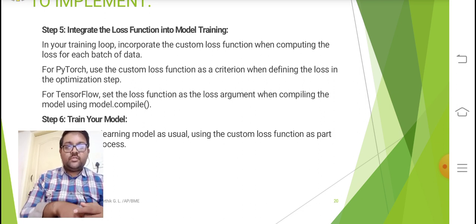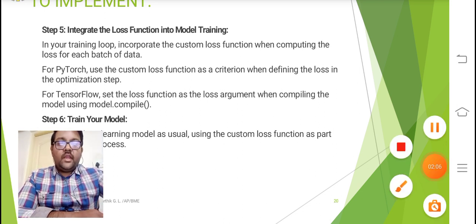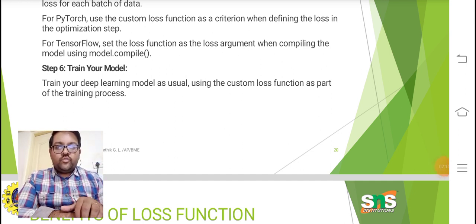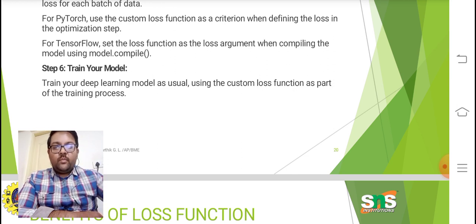The next one is Step 6: Train your model. Train your deep learning model as usual using the custom loss function as a part of the training process.